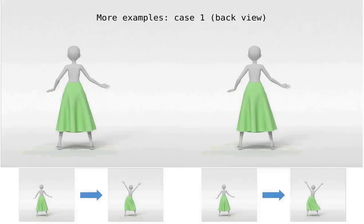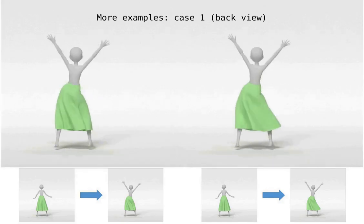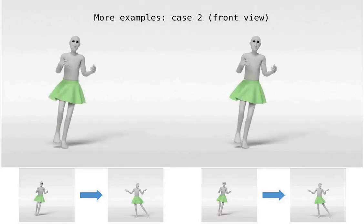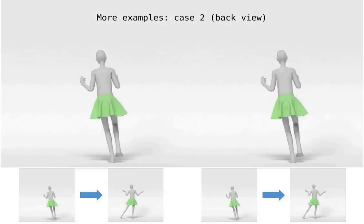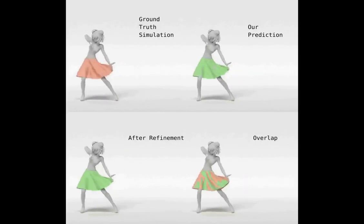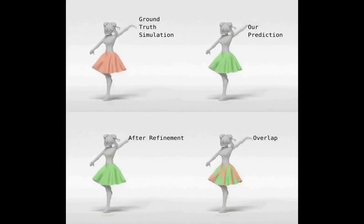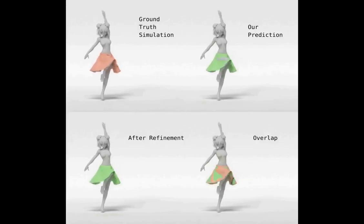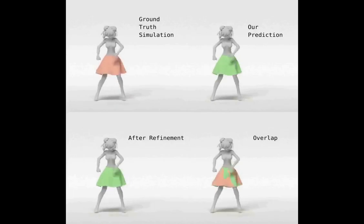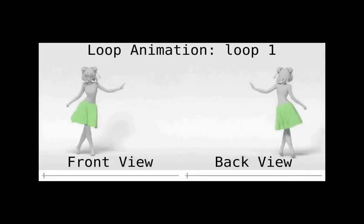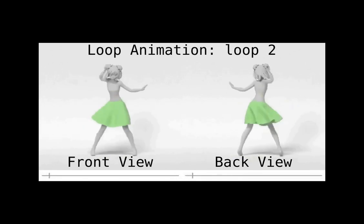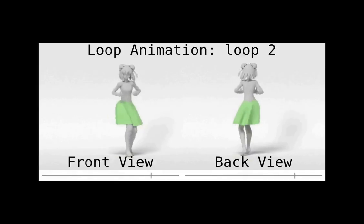Here we show more examples with different garments and different characters. We show a side-by-side comparison of two animations starting from the same keyframe but ending with two different keyframes. Here we compare a sequence of ground truth simulation in our dataset and the reconstruction through our learned latent space. Since our system is only driven by a fixed period of previous body motion, one application is to create garment movement for loop animation — here we show a side-by-side comparison.